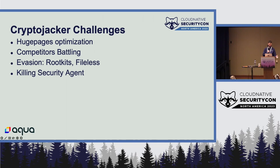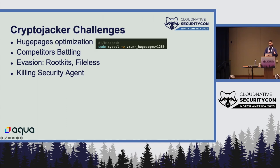Those attack vectors have been around for many years, but cryptojackers keep upgrading their techniques and optimizing. One optimization is changing the huge pages setting, which allows actors to increase the memory page size. Once they have a foothold in a container, running the miner as-is isn't very efficient, so they profile how many cores are available and the architecture of the environment, then set huge pages to optimal values. According to documentation of several open source miners, this can increase efficiency by 50%.